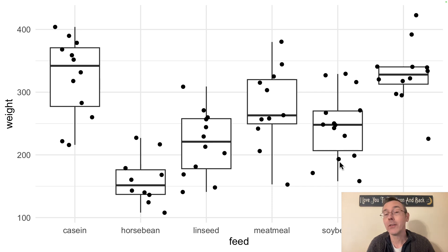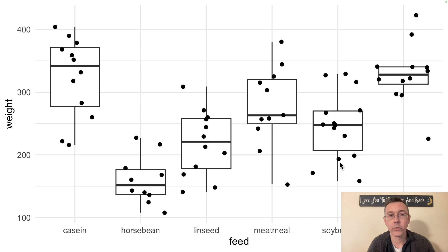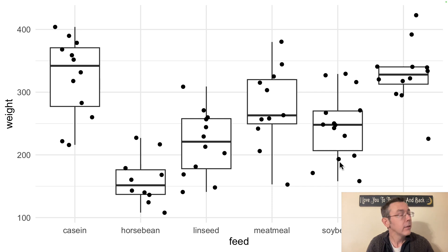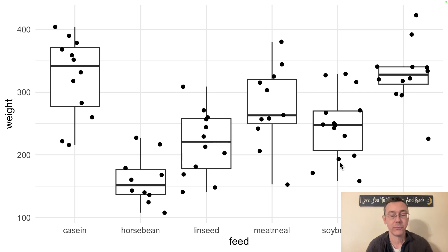One good thing about having the visualization is that it lets us think about whether the assumptions of ANOVA are reasonable. In particular, ANOVA requires equal variances between the groups, so roughly speaking the widths of these boxes should be about the same. We also need the data to be normally distributed within each group, so these boxes should be relatively symmetric. ANOVA is robust against both of those assumptions within reason, so here we're just broadly checking that they're roughly okay. The third assumption — that observations must be independent — can't be checked with a visualization; that has to do with study design.